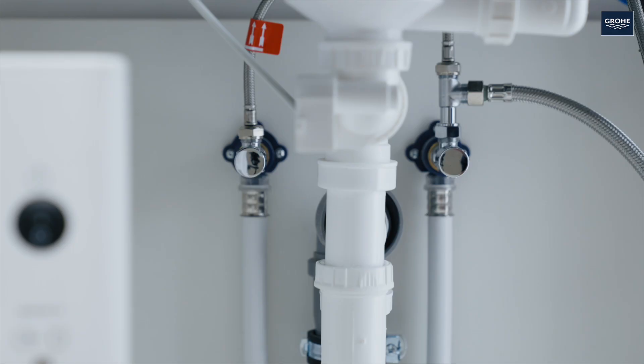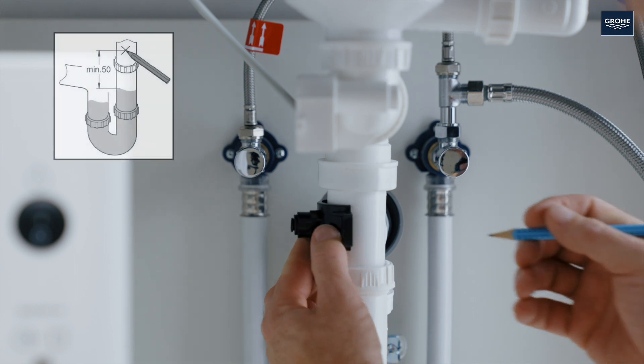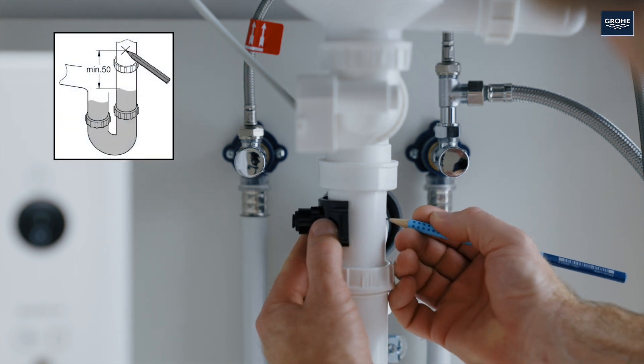Now the concentrate hose is installed. To do this, drill a 7-10mm hole above the sealing water level.